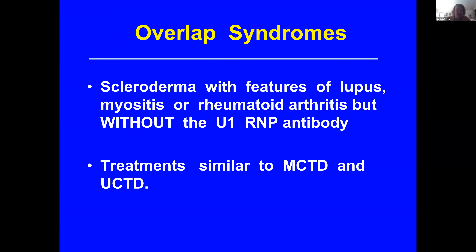Overlap syndromes are patients, particularly in scleroderma, who have features of lupus, myositis, or rheumatoid arthritis, but who do not have the U1RNP antibody. We think it's important to clarify which process is going on in the disease. The treatments for all of these diseases, whether you have an overlap syndrome, mixed connective tissue disease, or UCTD, are really focused towards the problems the individual patient has.